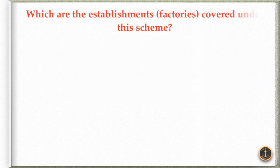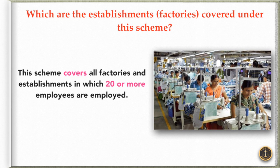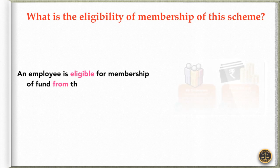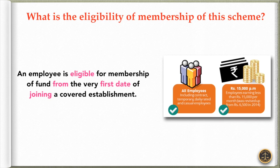Now, the question is: which are the establishments and factories covered under this scheme? The scheme covers all factories and establishments in which 20 or more employees are employed. The next question is: what is the eligibility for membership of this scheme? An employee is eligible for membership of the fund from the very first day of joining a covered establishment. However, it has some basic salary requirements as well, as shown in the image.